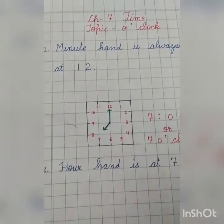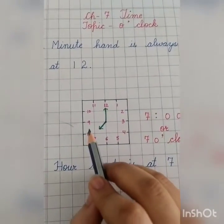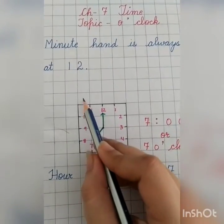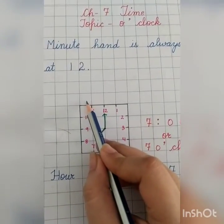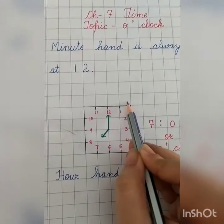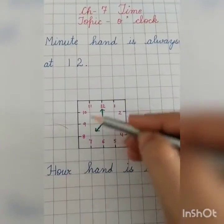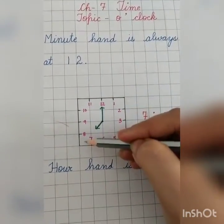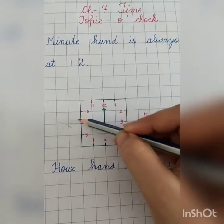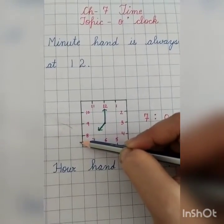I will tell you how to make a clock. You have to take four blocks — one, two, three and four — and four more blocks arranged in the same way — one, two, three and four.